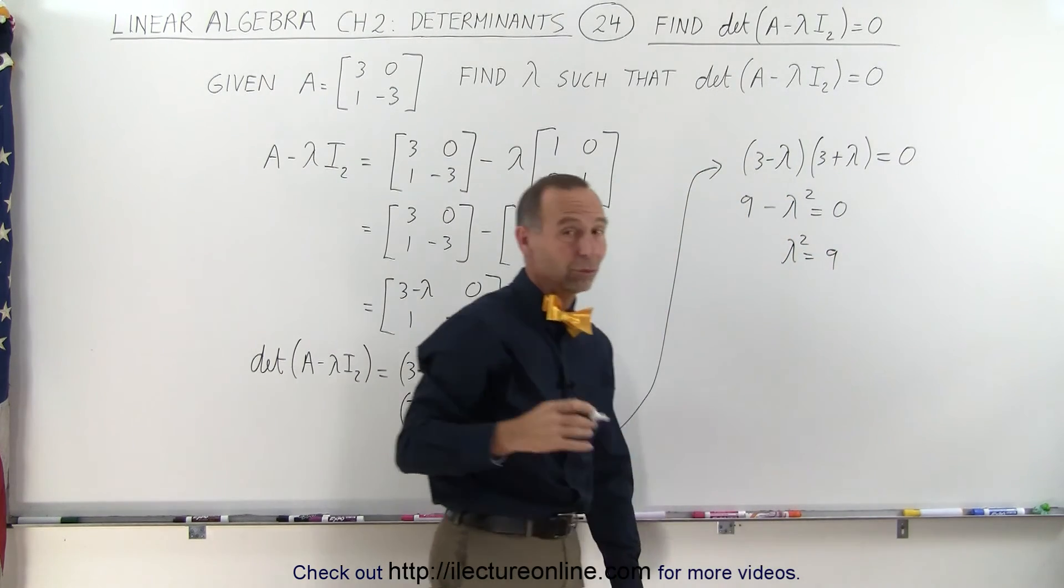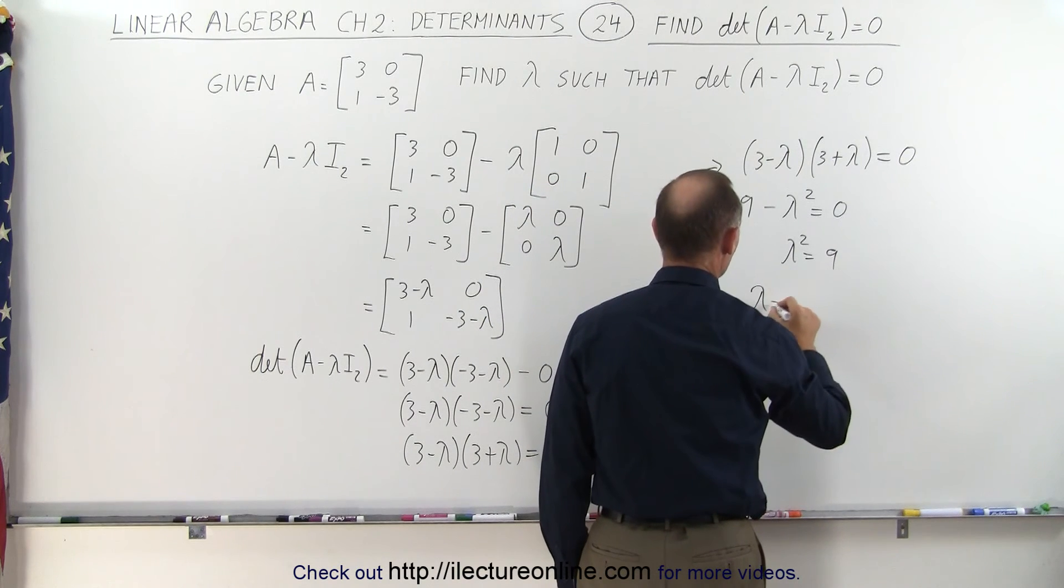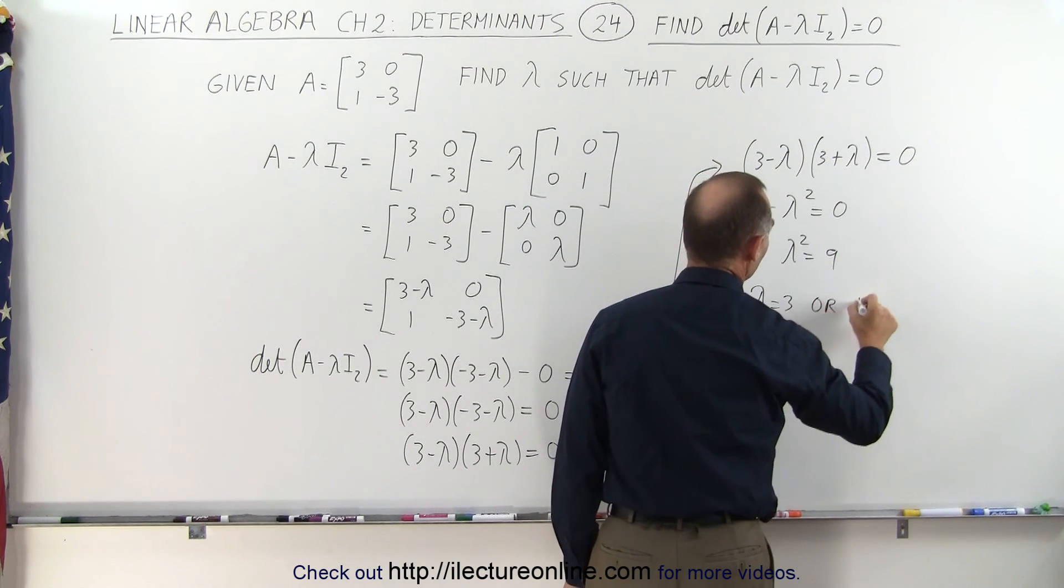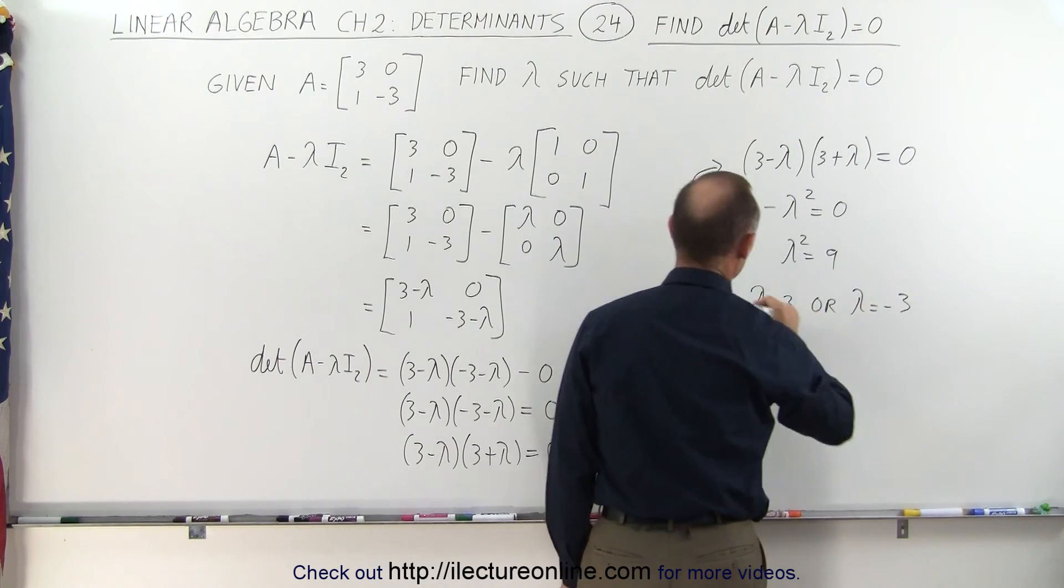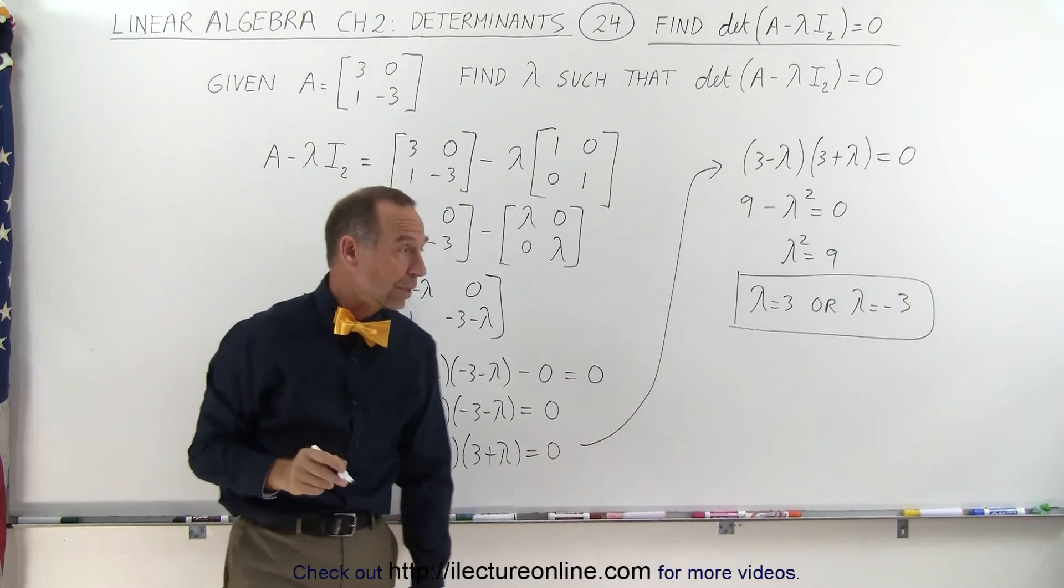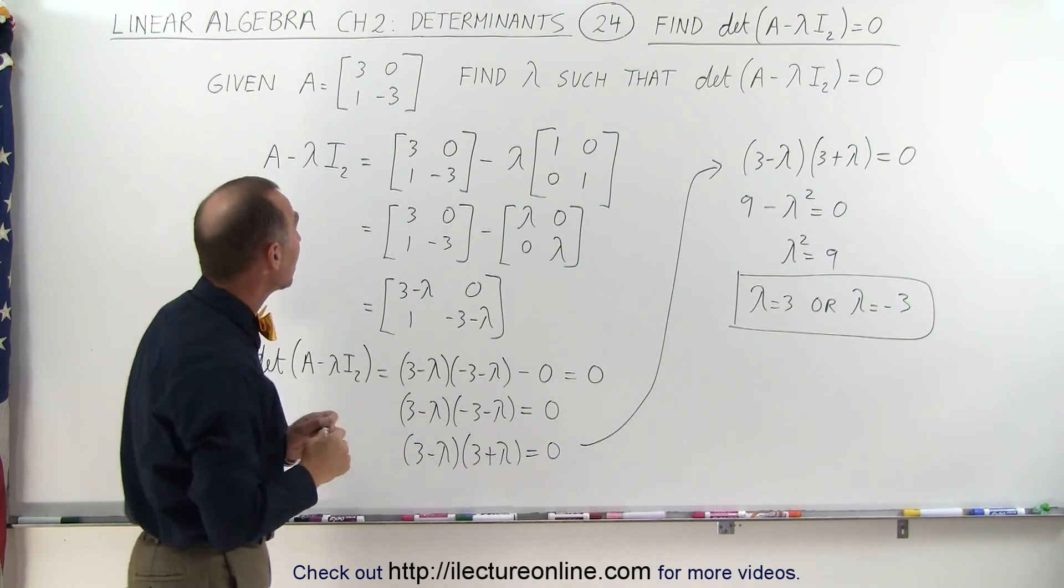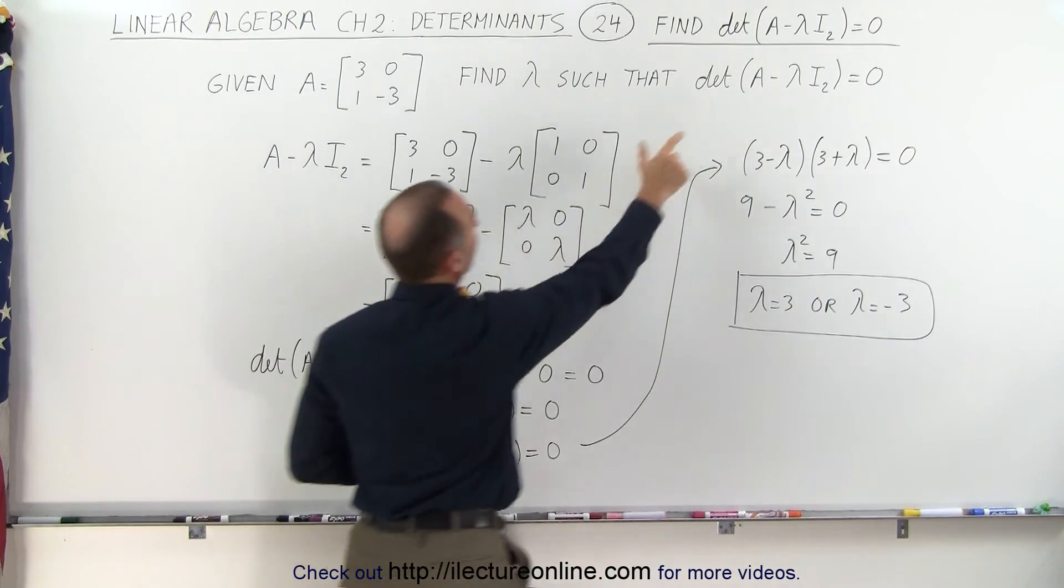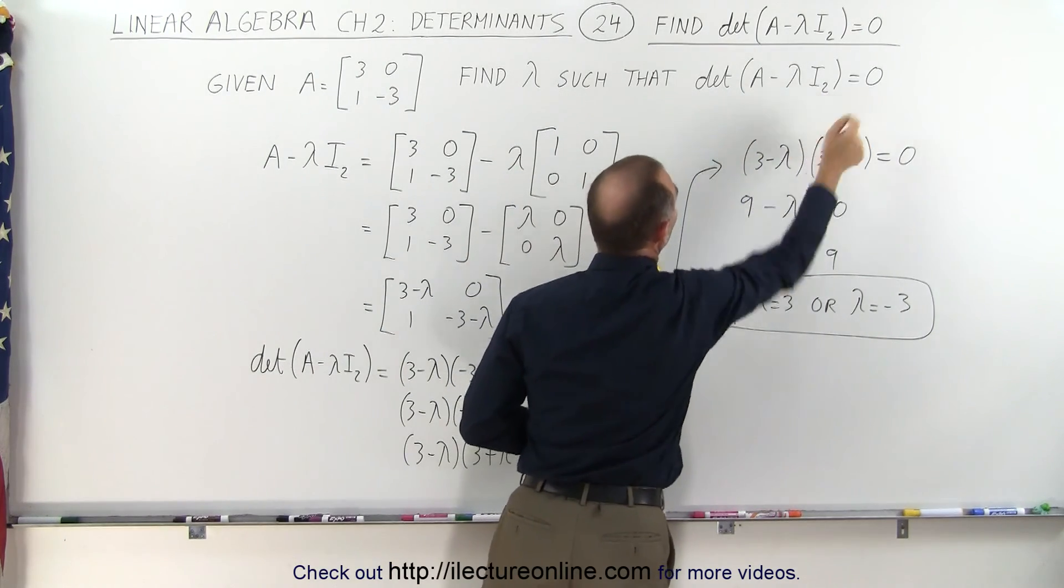And of course there's two solutions to that. We have lambda equals 3 or lambda equals negative 3. Thus for those two constants lambda equals 3 or lambda equals negative 3, the determinant of this equals 0.